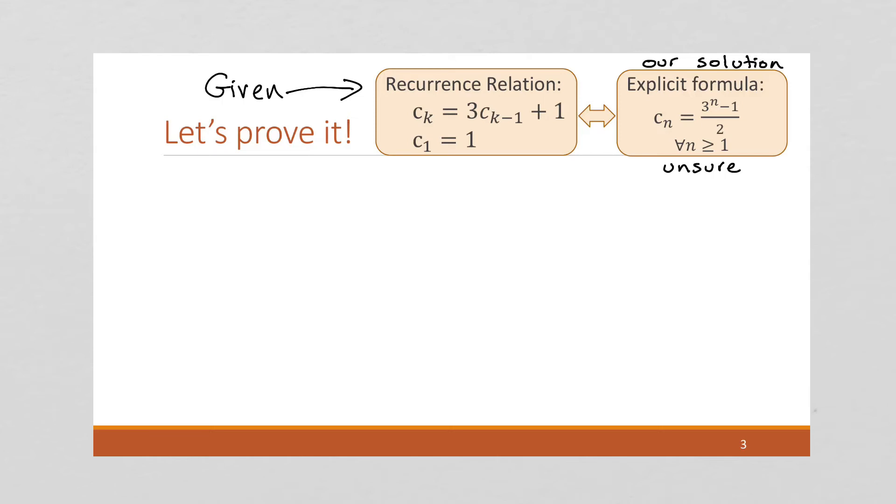So what we're going to do is we're going to do a proof by induction because we're doing a proof over sequences. And the correct way to do this is with a proof by induction. So we're going to start out with our base case. In this case, we're going to let n equal 1 because that is where we start for both of these.